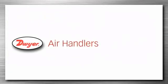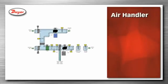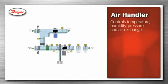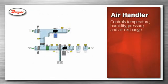Building automation systems provide the method to give a building a comfortable environment. An air handler is an integral part of the building automation system and provides control of temperature, humidity, pressure, and air exchange. Shown is an example of a type of air handler using a water-based temperature system with the products that Dwyer provides for the system highlighted.